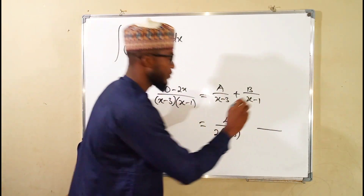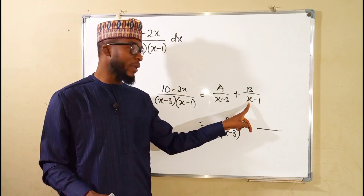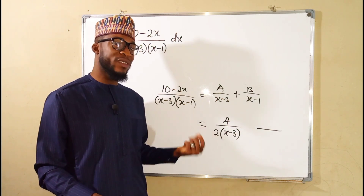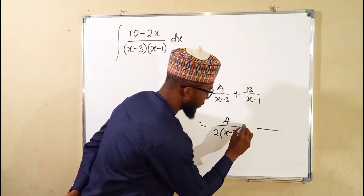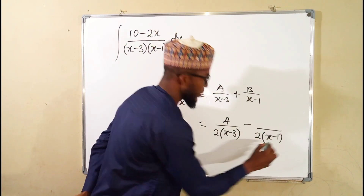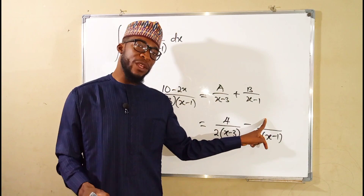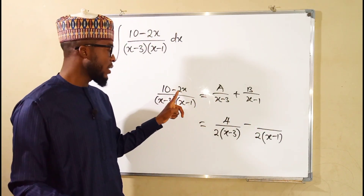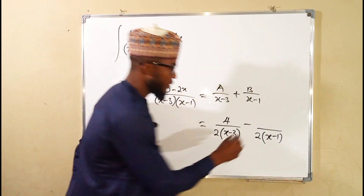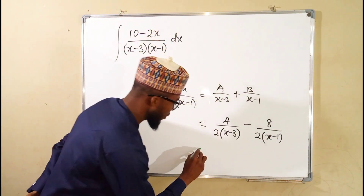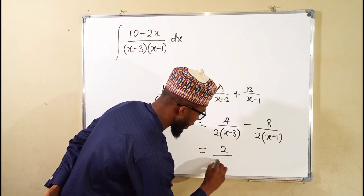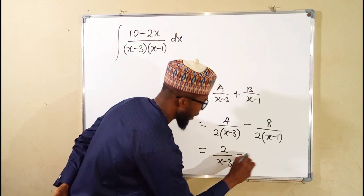For the other fraction, to transform (x minus 1) into zero, x must equal 1. Substituting: 1 minus 3 is negative 2, so we have negative 2 times (x minus 1). To find the corresponding numerator, substitute x equals 1: 2 times 1 is 2, and 10 minus 2 is 8. So: 2 goes into 4 twice, giving 2 over (x minus 3).